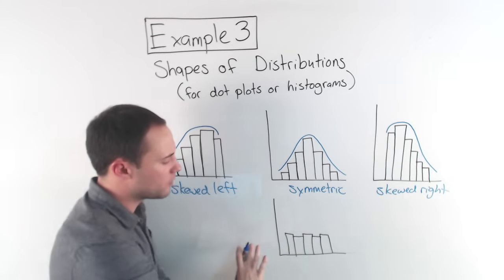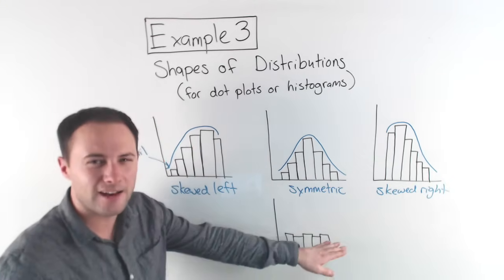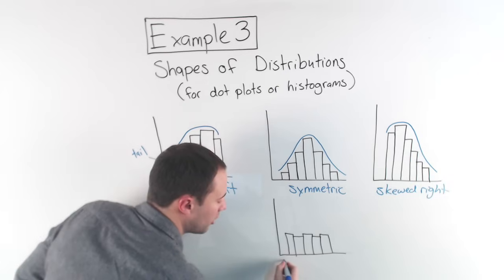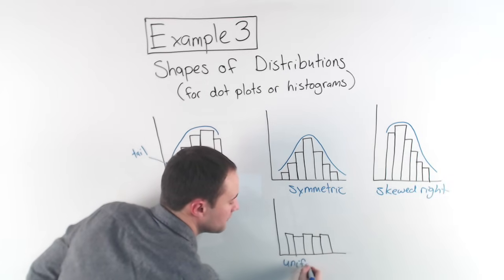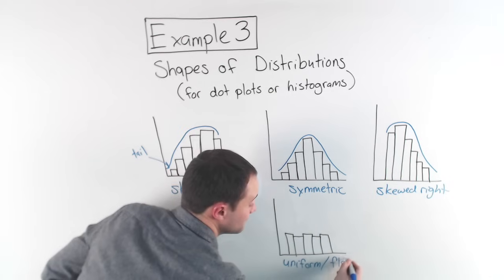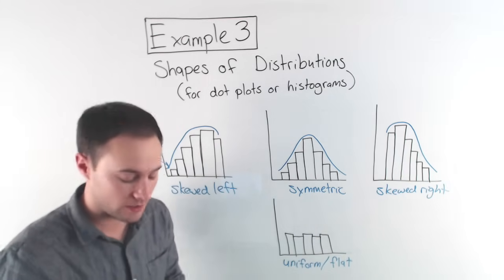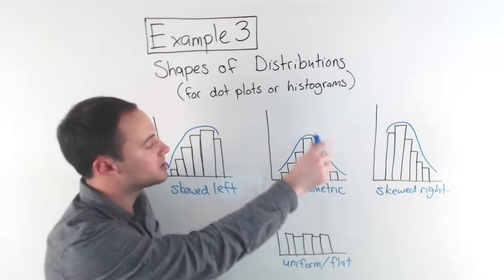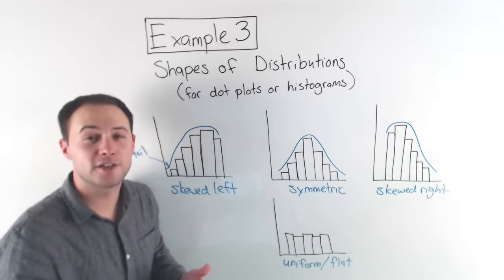And finally, well, what if you have one where it's pretty much flat? This, we would call it's uniform, or you could also just call it flat, flat distribution, okay? So those are the shapes of distributions. Here's one to try on your own.